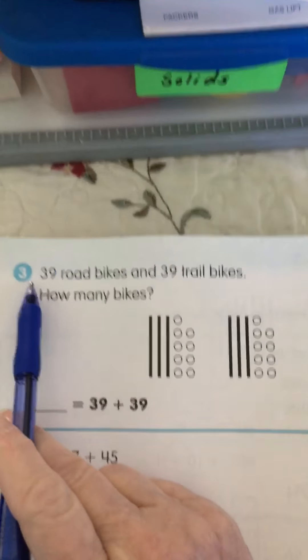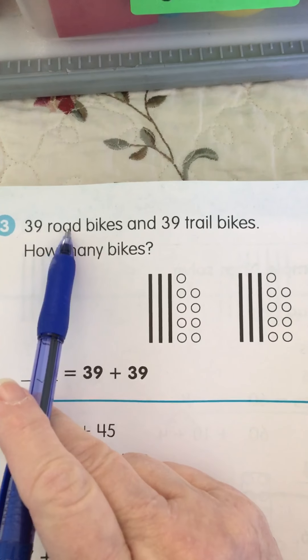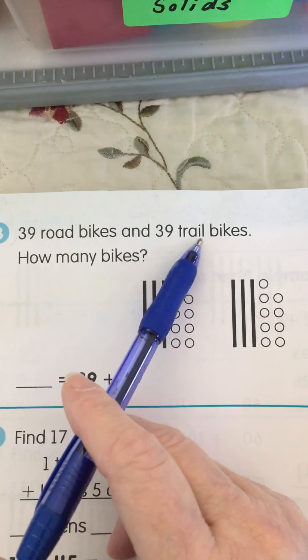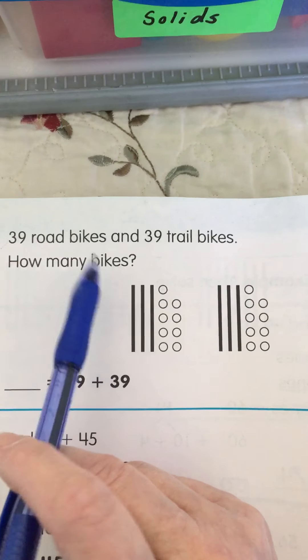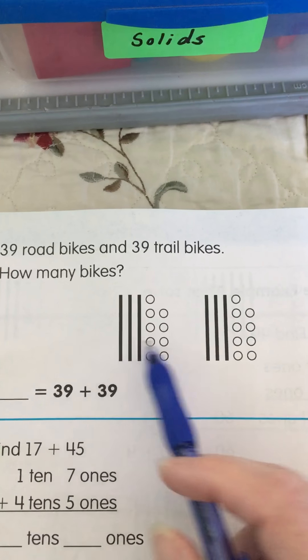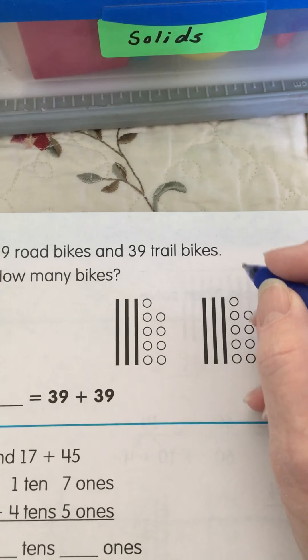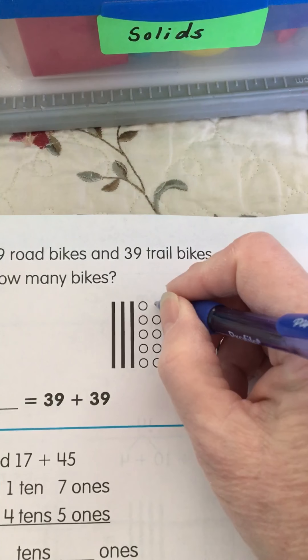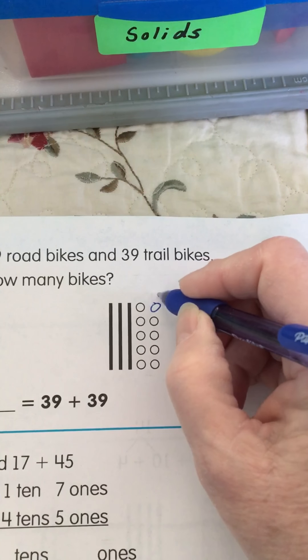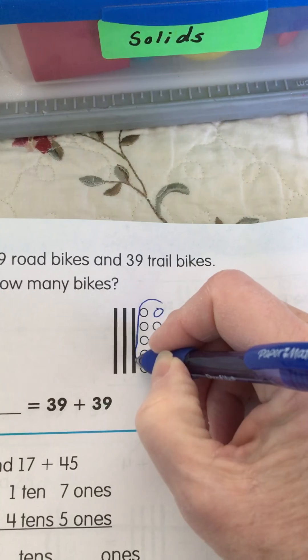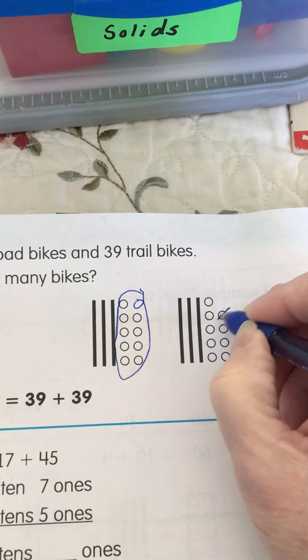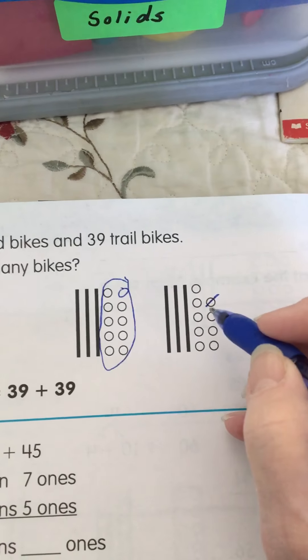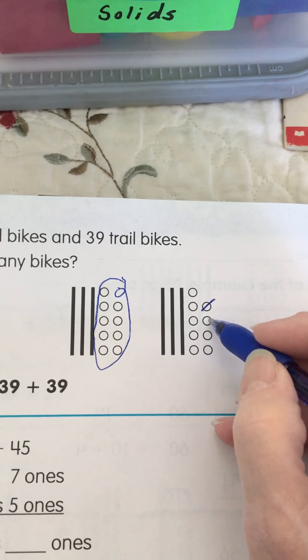Okay. Now we have 39 road bikes and 39 trail bikes. How many bikes? Okay. So we've got our markers here. So we're going to put one over here. Make it a ten. Circle it. There's our bundle of ten. And remember we have to mark one off because we put it over there. And now how many ones do we have left?